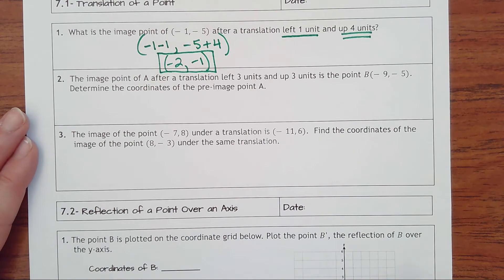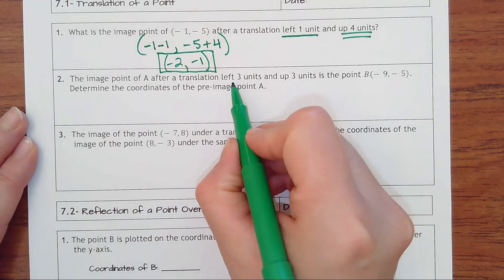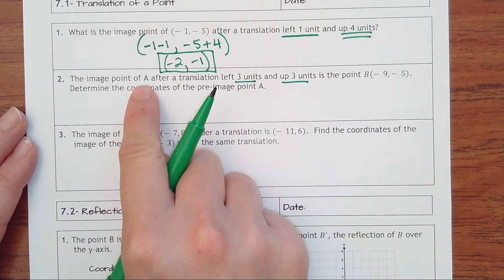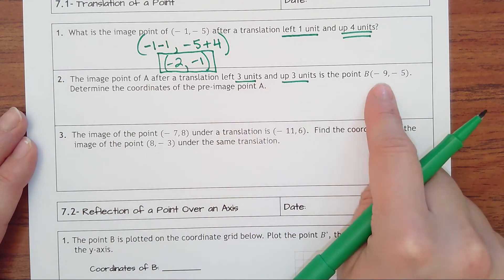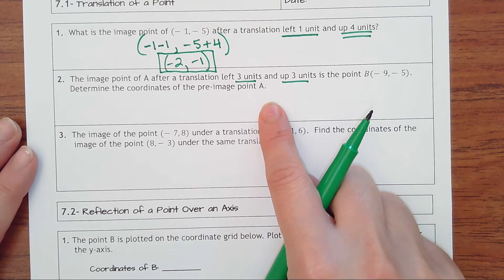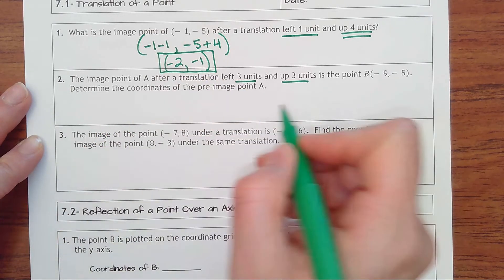All right, number two is a little different. It says the image point of A after a translation of left three and up three is this point. So some point got moved and became this. We have to determine the coordinates of that pre-image, the original point A.